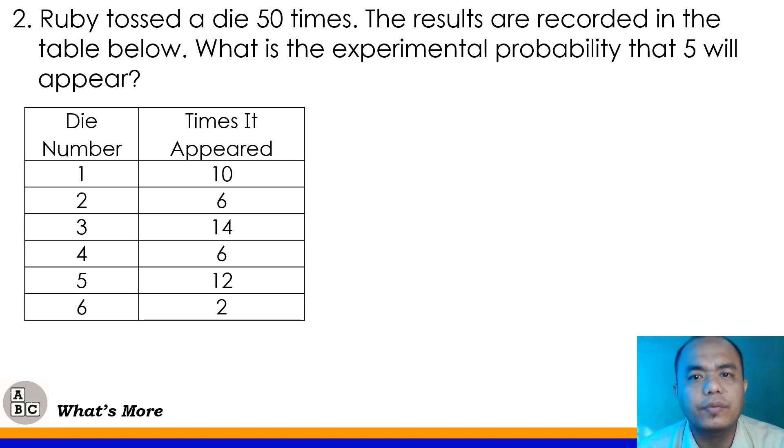Number 2, Ruby tossed a die 50 times. The results are recorded in the table below. What is the experimental probability that 5 will appear? So, we have here the result class. Actually, this is a form of experimental probability. We have the result in rolling a die 50 times. So, the 1 appeared 10 times. Number 2 appeared 6 times. Number 3, 14 times. Number 4, 6 times. 5 is 12 times. And number 6 class, on the die, appeared 2 times only.